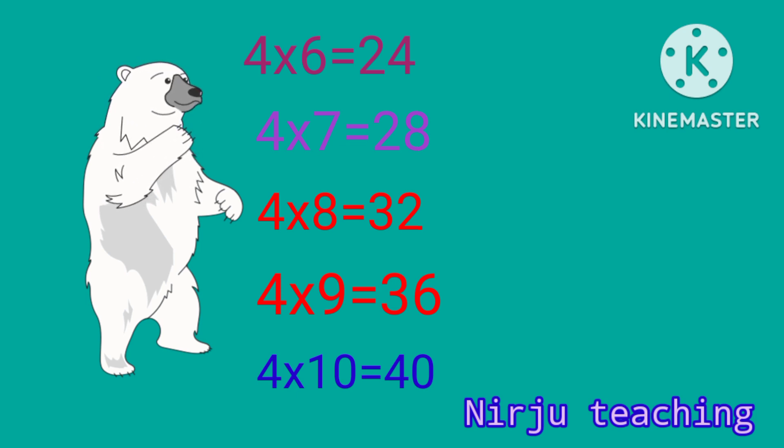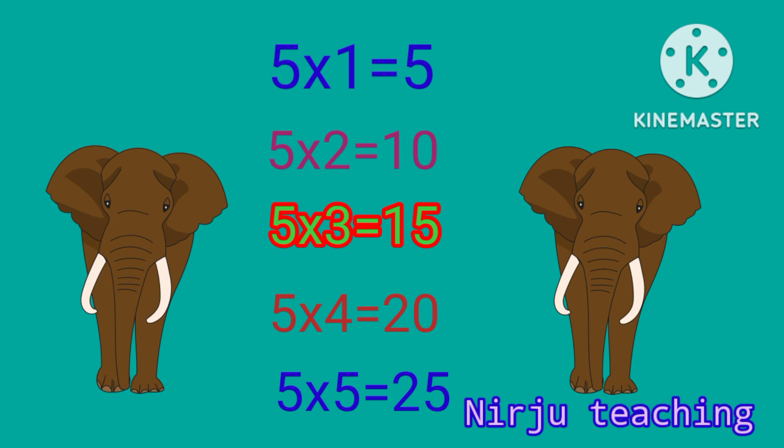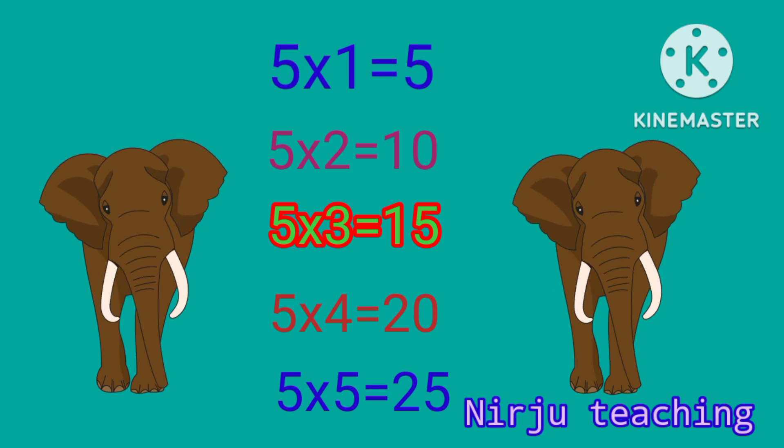Four times 10 is 40. Five times 1 is 5, five times 2 is 10, five times 3 is 15, five times 4 is 20, five times 5 is 25.